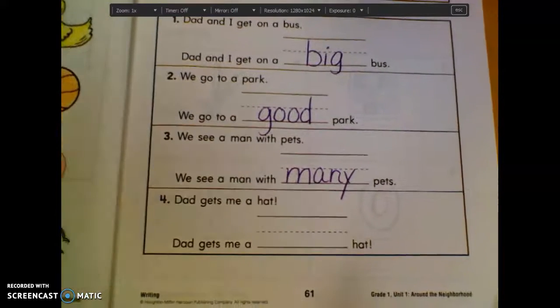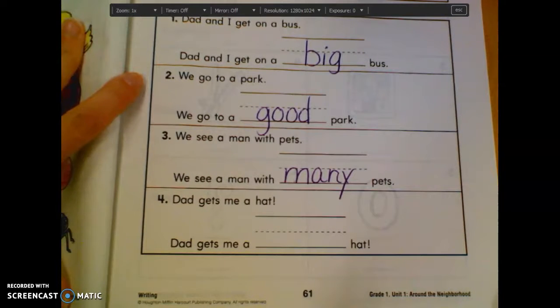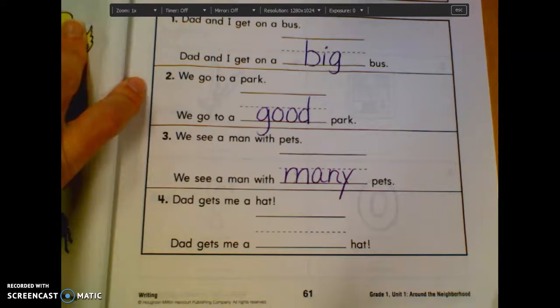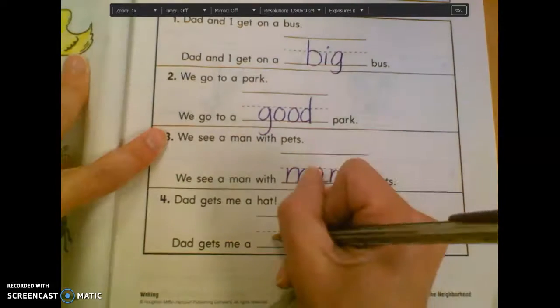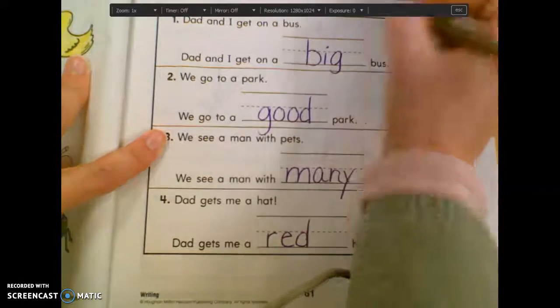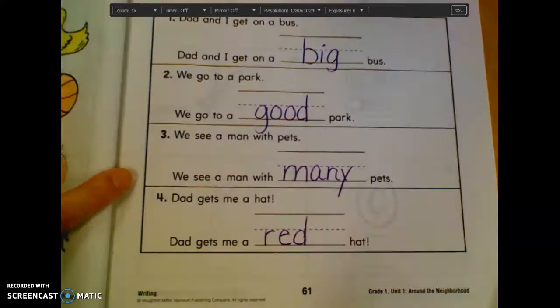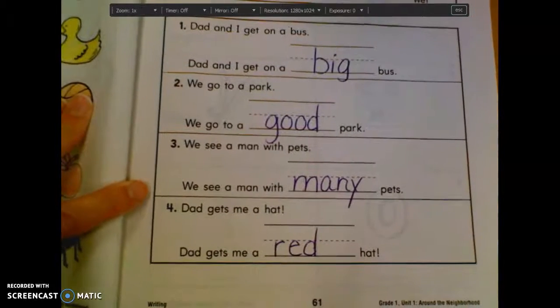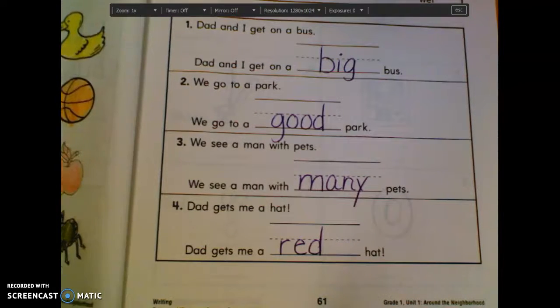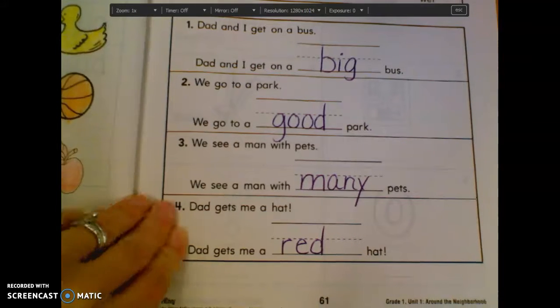Number four. Dad gets me a hat. Dad gets me a blank hat. Colin? No. Jordan? What'd you say? A red hat? Yeah, you could say red hat or even funny hat if you didn't already use funny. Or tan. A tan hat. Okay. Tan is like a brownish color, so you want to make sure it makes sense. All right. Good. Let's go on to the next page, page 62.